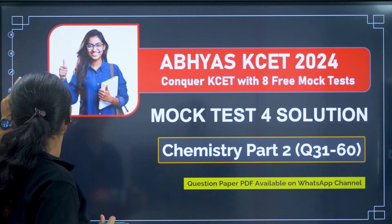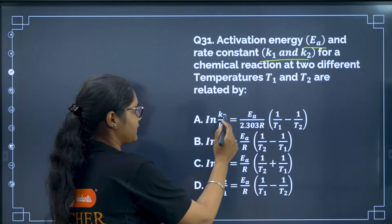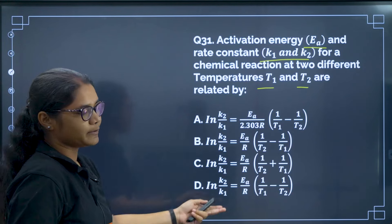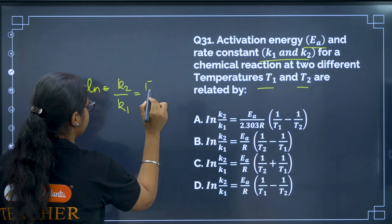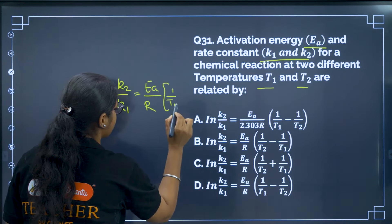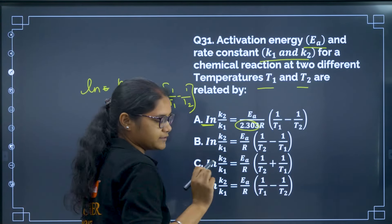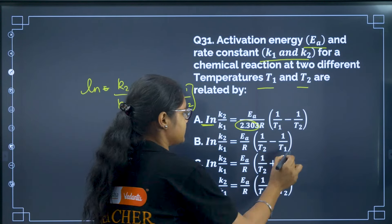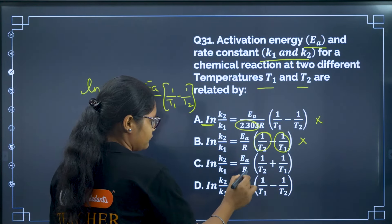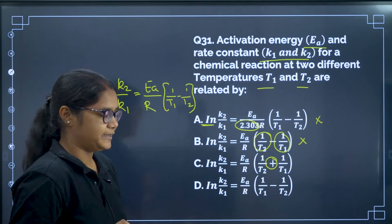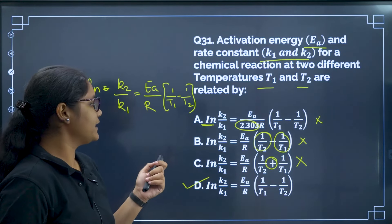Question 31: Activation energy is given; K1 and K2 are rate constants at two different temperatures T1 and T2. We have to find which equation relates them. The Arrhenius equation is: ln(K2/K1) = Ea/R × (1/T1 − 1/T2). Key distinctions: if ln is used, we should not write 2.303 — that factor only appears with log. Option B has 1/T1 minus 1/2, which is wrong. Option C uses a plus sign instead of minus. So the correct answer is option D.